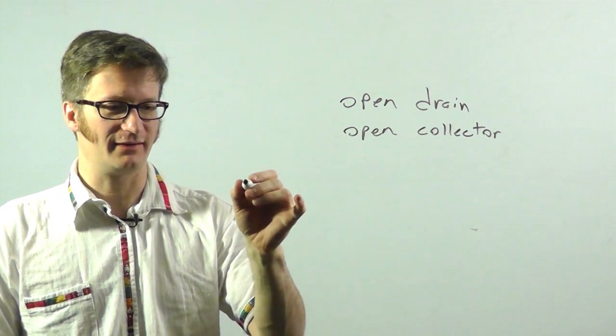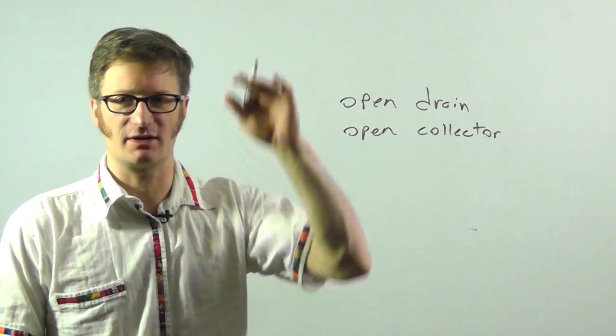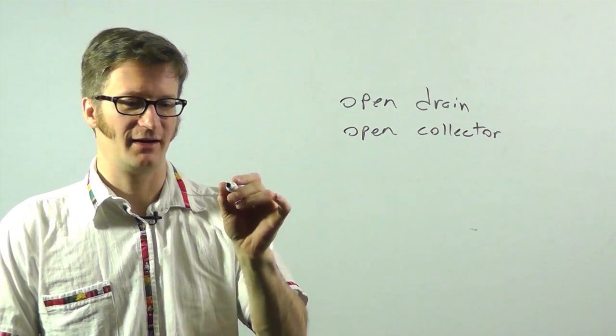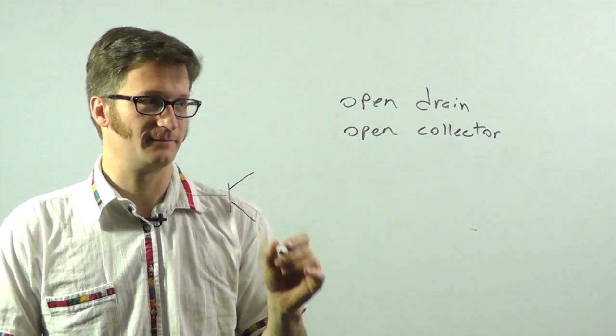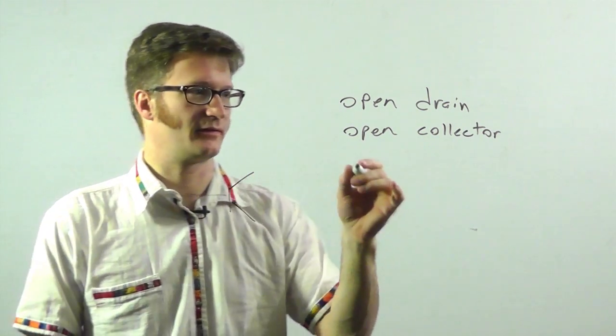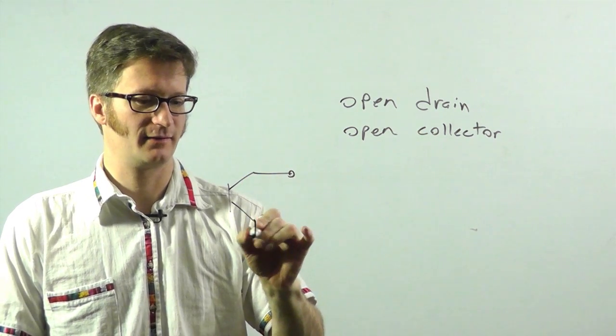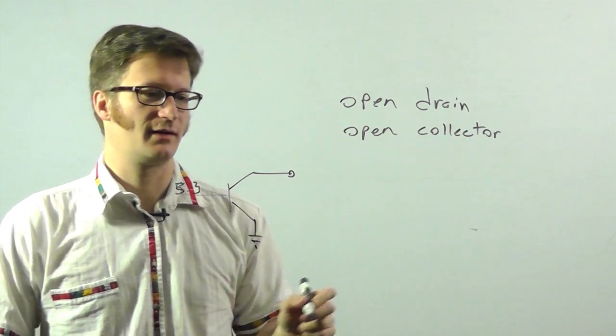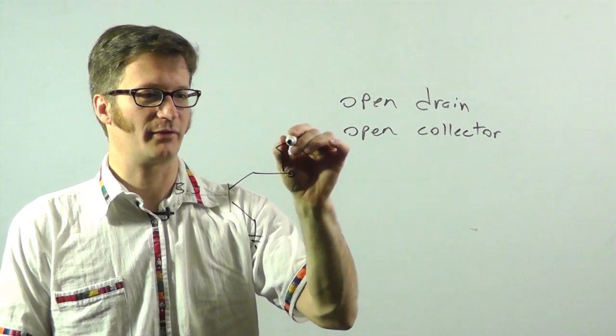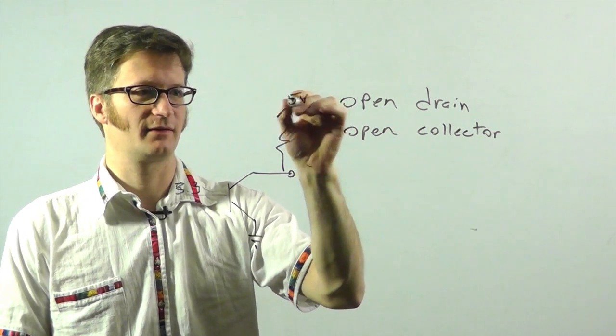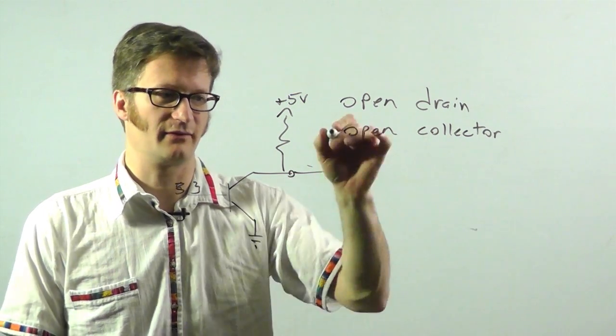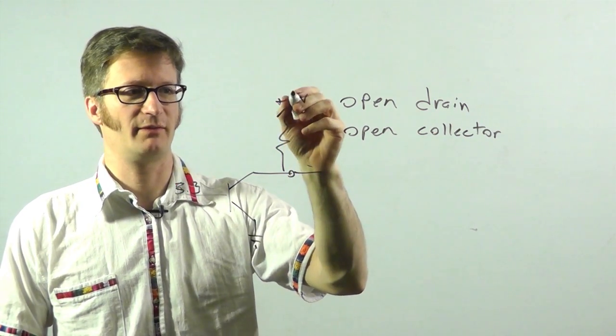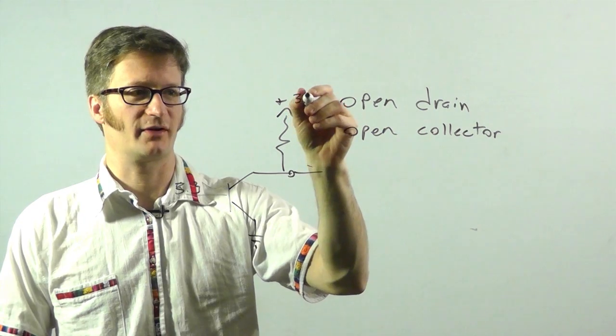So what you can do with these is you can interface with different voltage levels. So if I have a 3.3 volt device and I have an open collector output, maybe it's 3.3 volts coming into here, but I could have my pull-up resistor going up to 5 volts. And then this has a voltage swing of 0 to 5 volts. And vice versa, if this was a 5 volt system and I wanted to interface with 3.3 volts, I would just have my pull-up resistor going to 3.3.